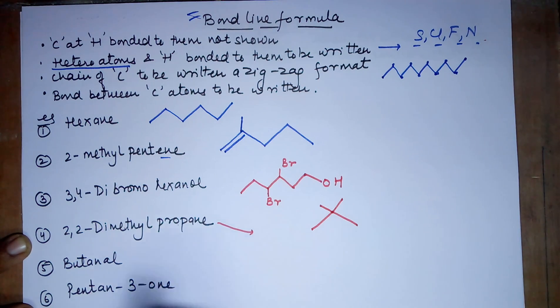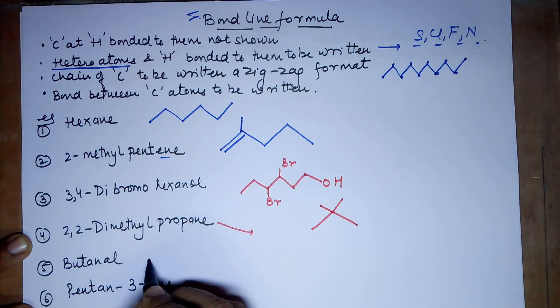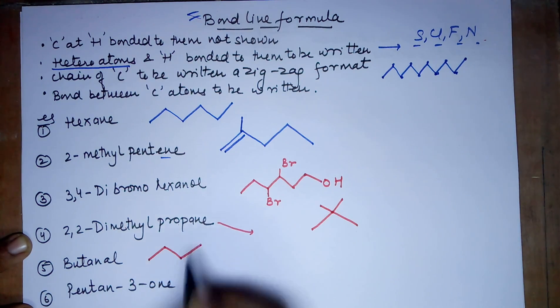Coming to butanal. -al means an aldehyde. Aldehyde is C double bond O and an H. But- means 4 carbons. 1 carbon, 2 carbon, 3 carbon, 4 carbon. Aldehyde is a terminal group. So this group would be done at the end.